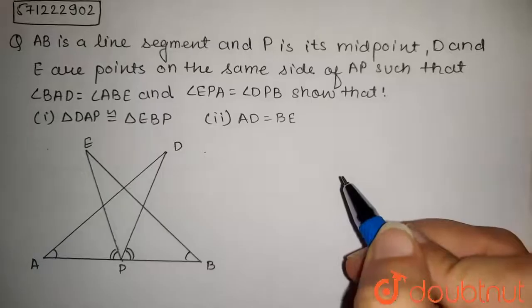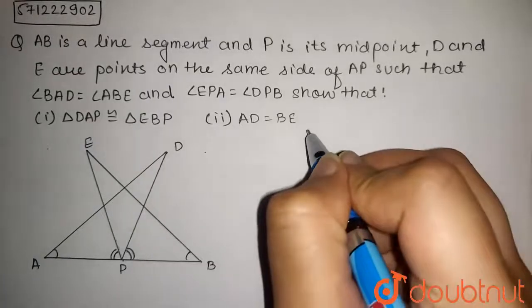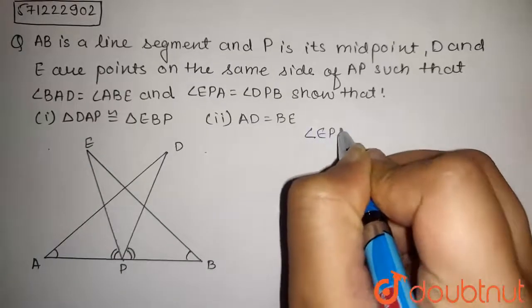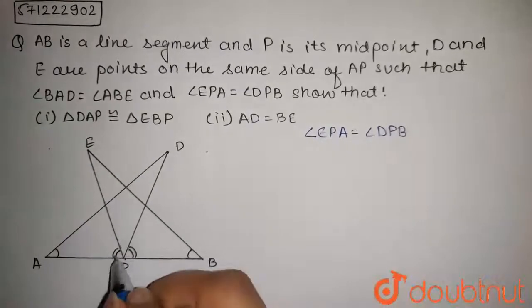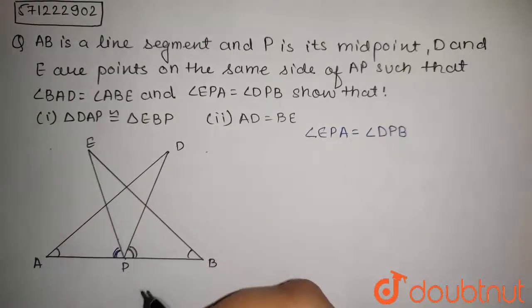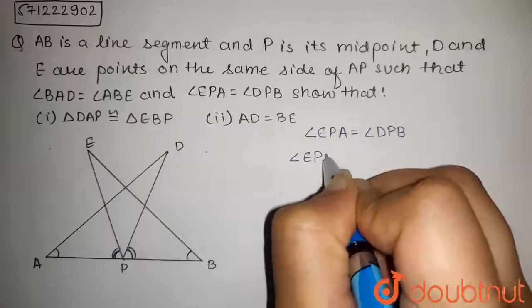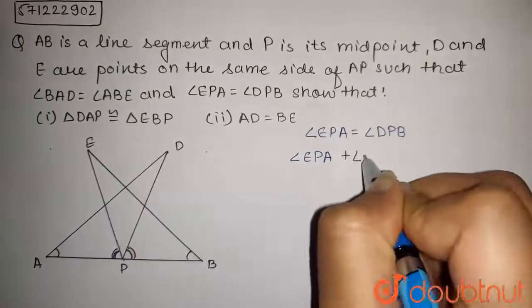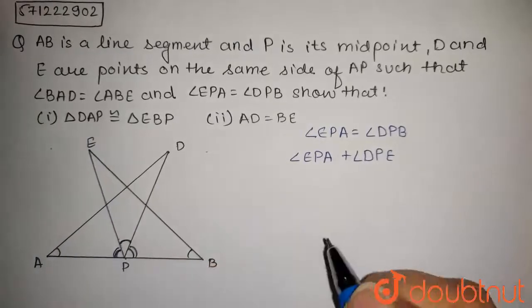Now, we will prove the first part. Firstly, we have given that angle EPA is equal to angle DPB. That is, this angle and this angle are equal. Now, we will add both sides angle DPE. That is, we will add both sides this angle.